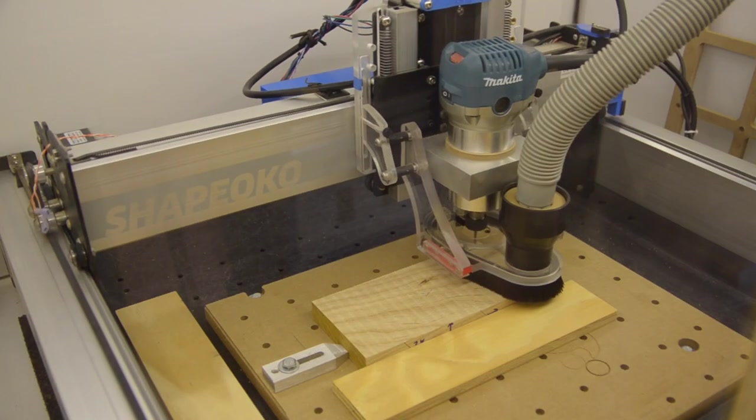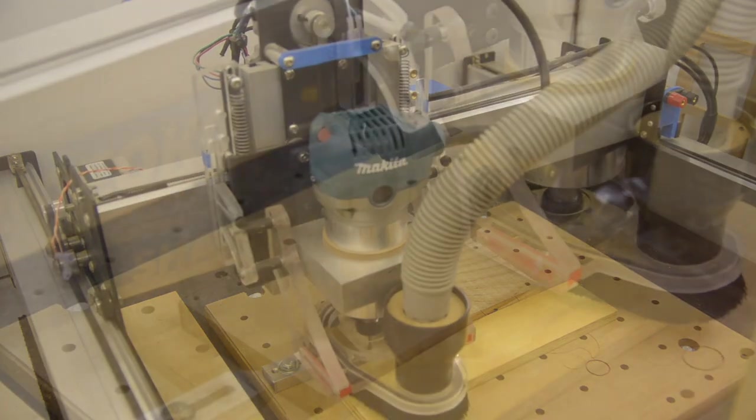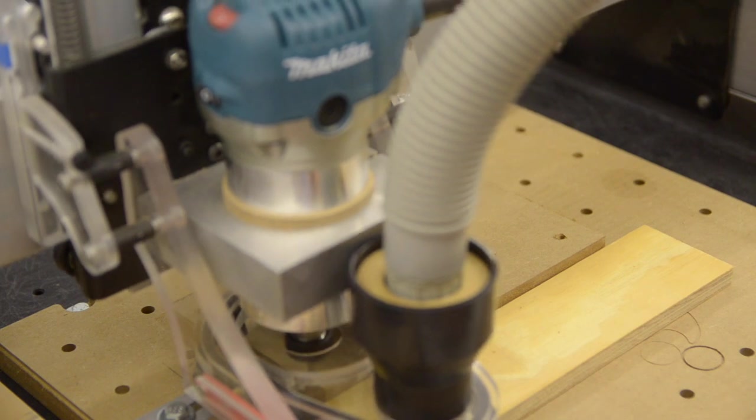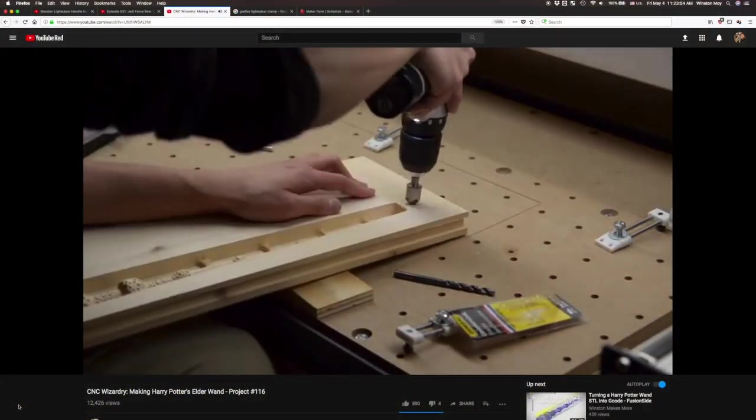So I chose option three, indexing pins. By machining holes in my stock and wasteboard, I could use some indexing pins to align my piece after the flip. You only need two holes to establish a position and orientation in the XY plane. I showed that off when I machined my Harry Potter wand.